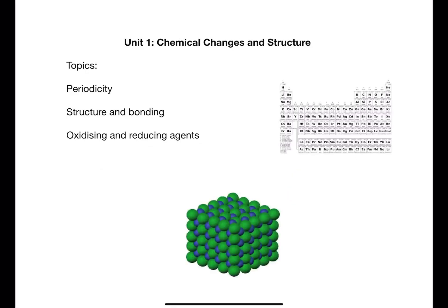The first unit is called chemical changes and structure. This unit covers periodicity which is the study of the periodic table and the trends due to the structure of atoms. Building on material learned in national five, structure and bonding looks in more detail at covalent bonding and introduces intermolecular forces and their impact on the properties of substances.